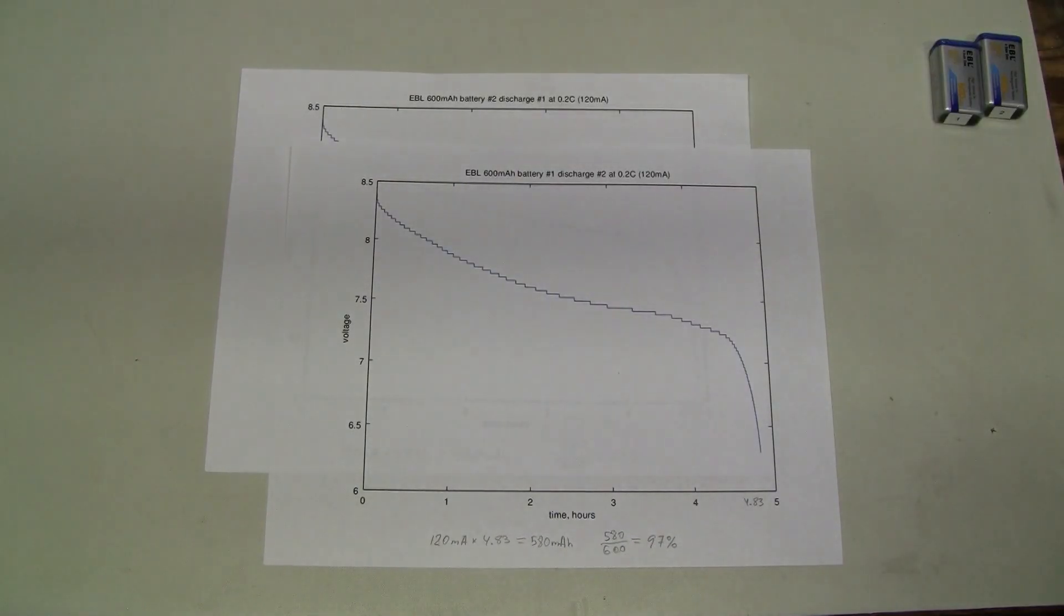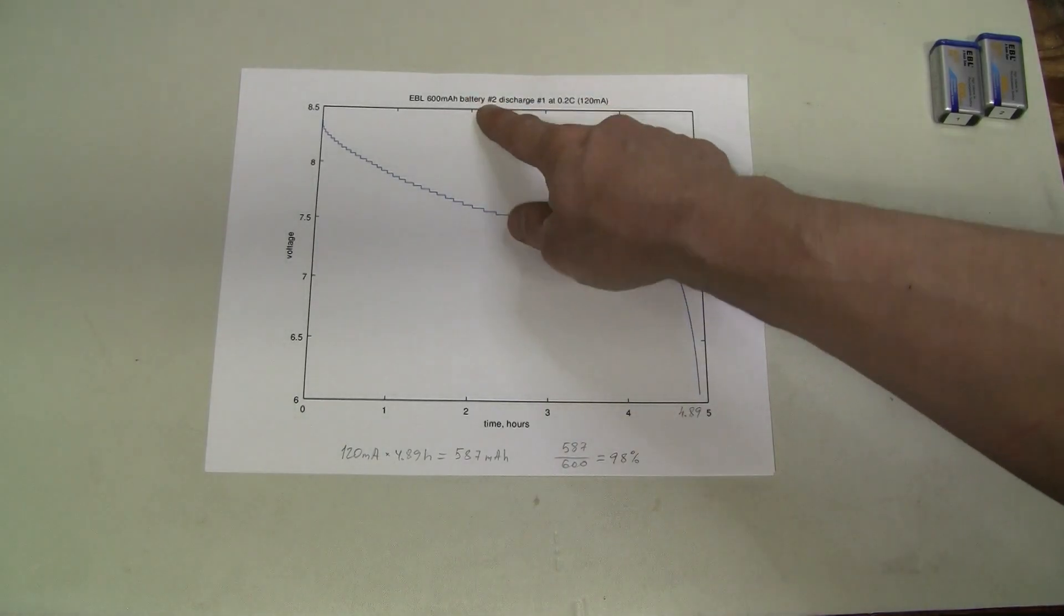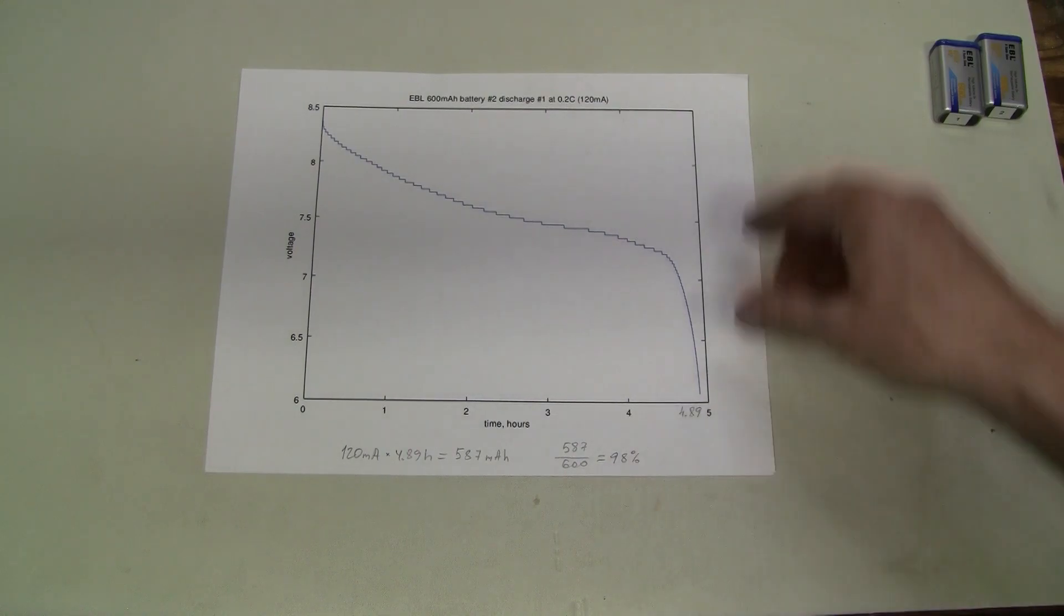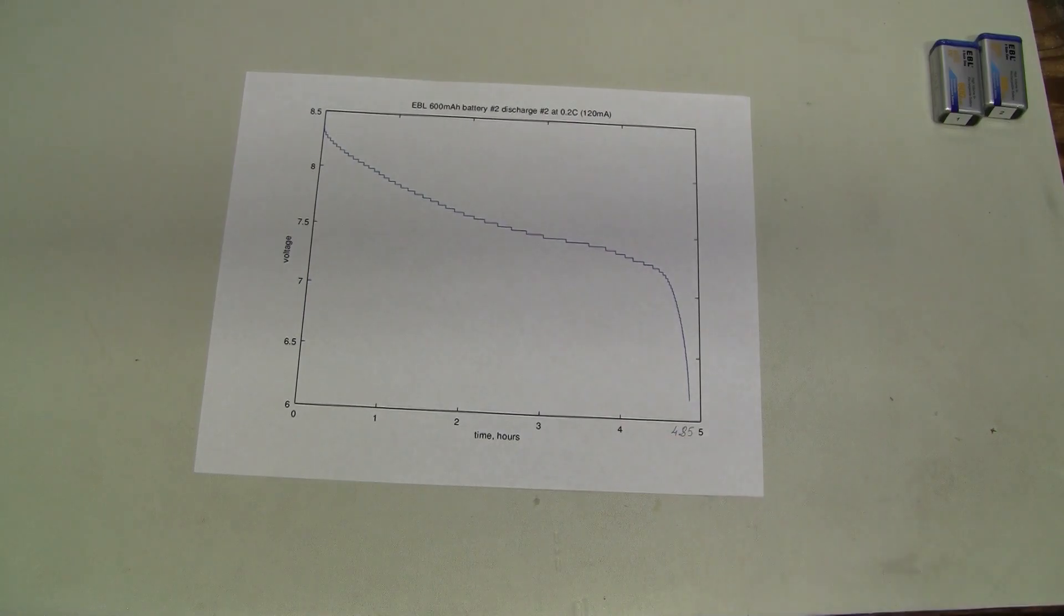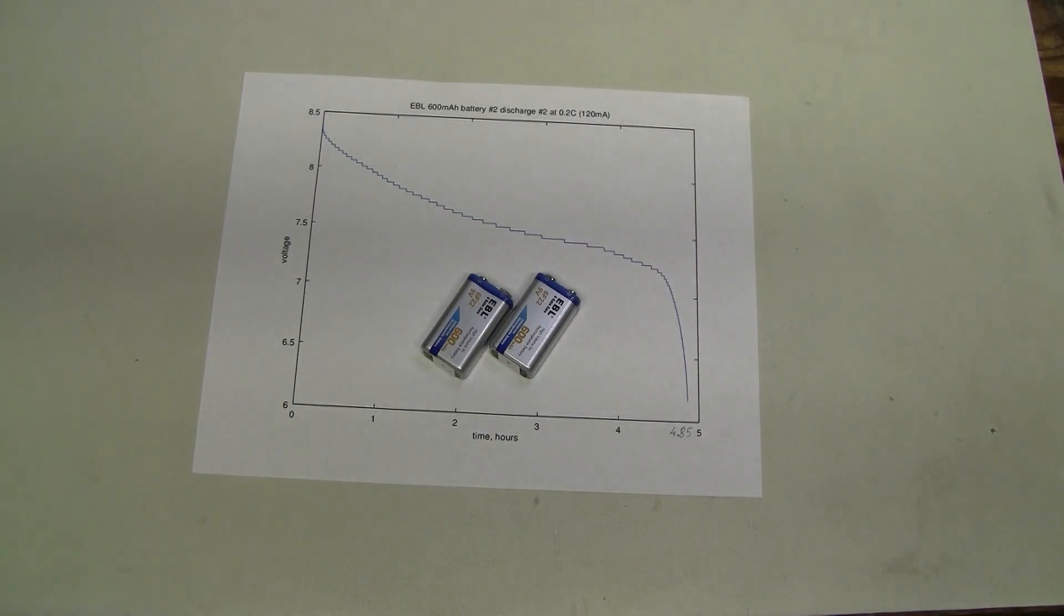Let's see, the second discharge was very close to the first one, 4.83 hours and again about 97% of the rated capacity. Here we have battery number 2, discharge number 1 very close to the first one, 4.89 hours and 98% of the rated capacity. And discharge number 2, again very close to previous ones, 4.85 hours. So these two batteries performed quite consistently and showed the capacity very close to the rated capacity.